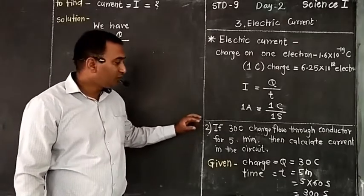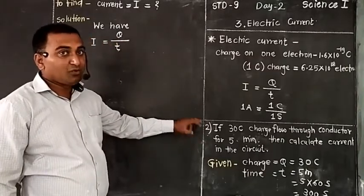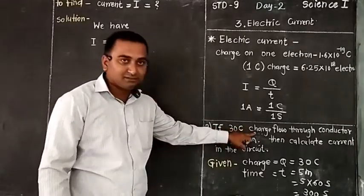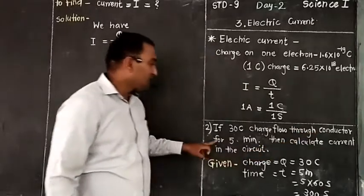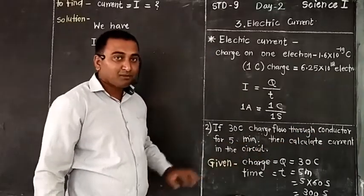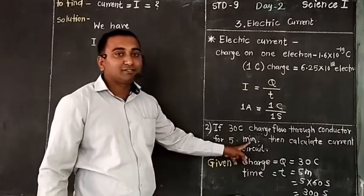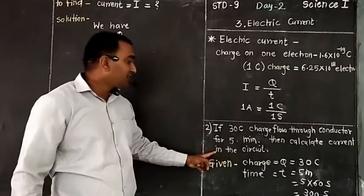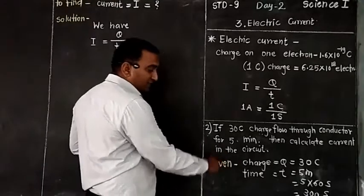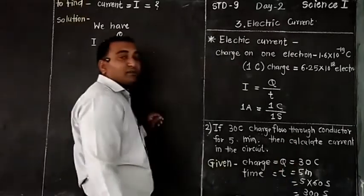I have changed one value in the first example to make the second example. What is the difference? Now it is 30 Coulomb charge flowing through a conductor for 5 minutes — here is the change. In the first example there were 5 seconds, but I have converted it to 5 minutes. Then calculate the current in the circuit. So what is given? Charge flowing through the conductor is 30 Coulomb. But the time is now 5 minutes.